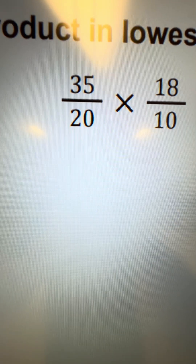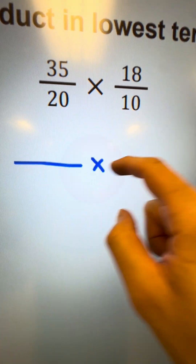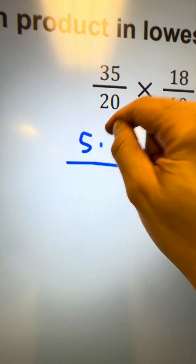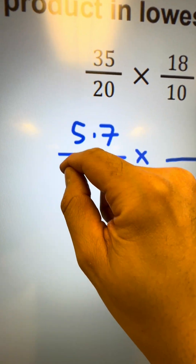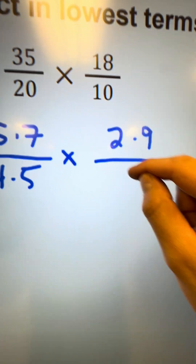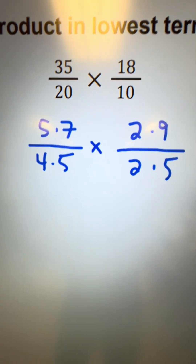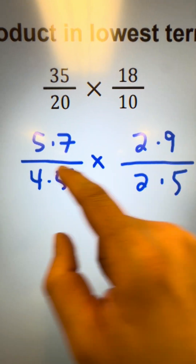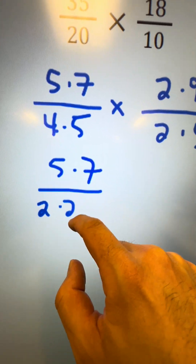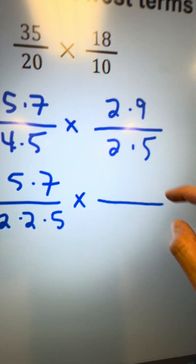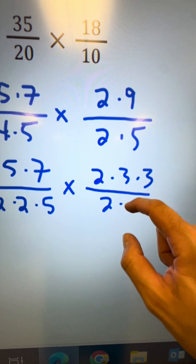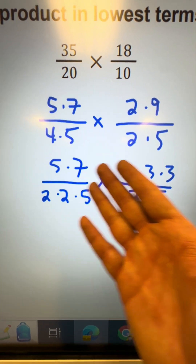Now let me go ahead and simplify this the other way I recommend, which is to do the prime factorization of each of these numbers. So 35 would be 5 times 7; 20 is 4 times 5; 18 is 2 times 9; and 10 would be 2 times 5. Going back to that prime number list — these are all prime except for 9 and 4. So 5 times 7 stays; 4 becomes 2 times 2; bring down that 5; 9 becomes 3 times 3; and 10 is 2 times 5.